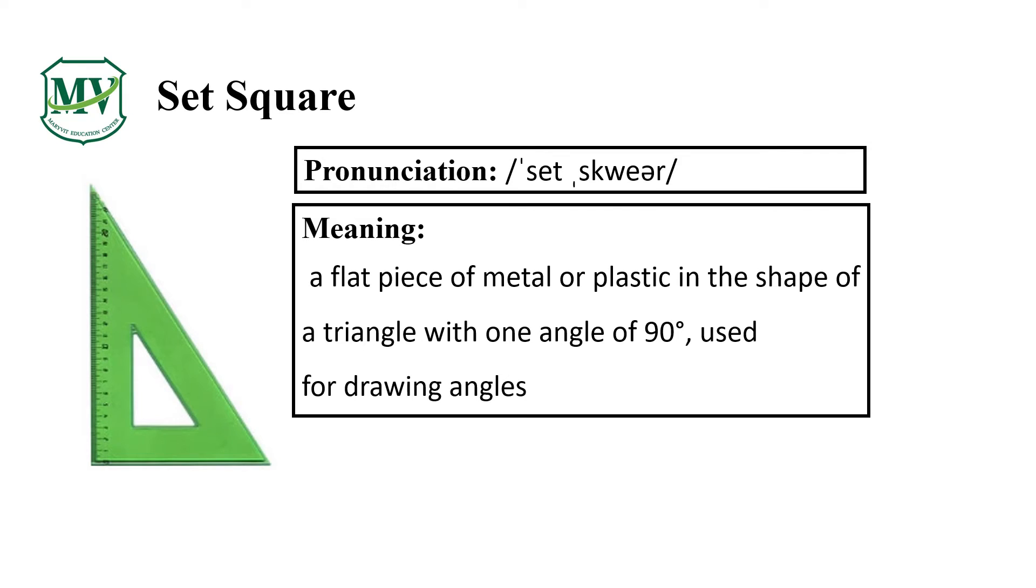Set Square. Again, Set Square. Set Square means a flat piece of metal or plastic in the shape of a triangle with one angle of 90 degrees. Used for drawing angles.